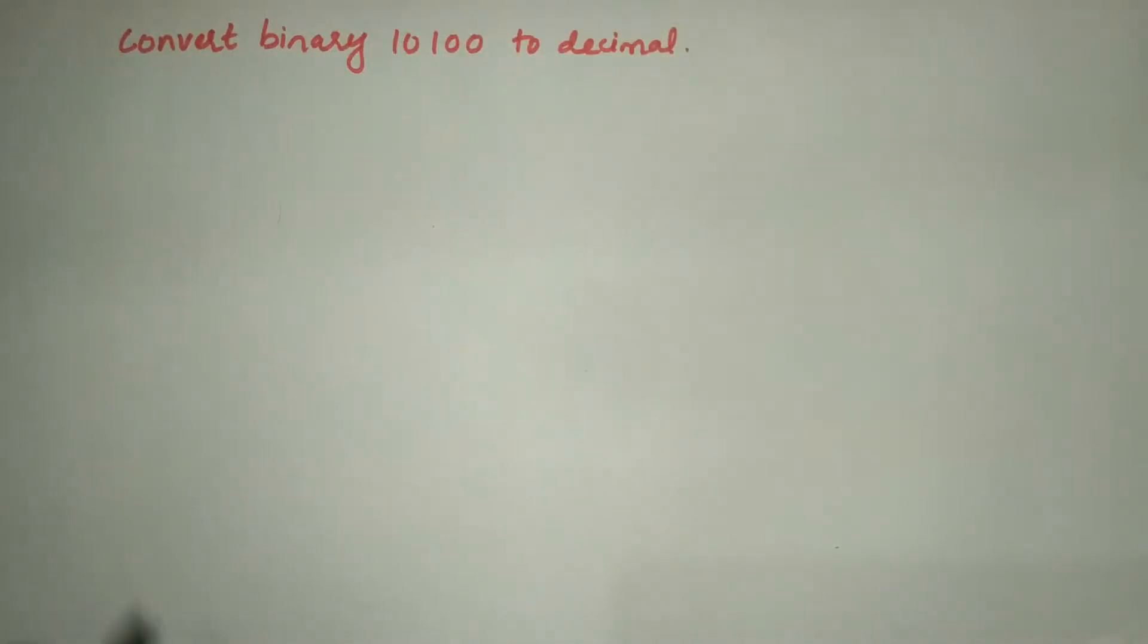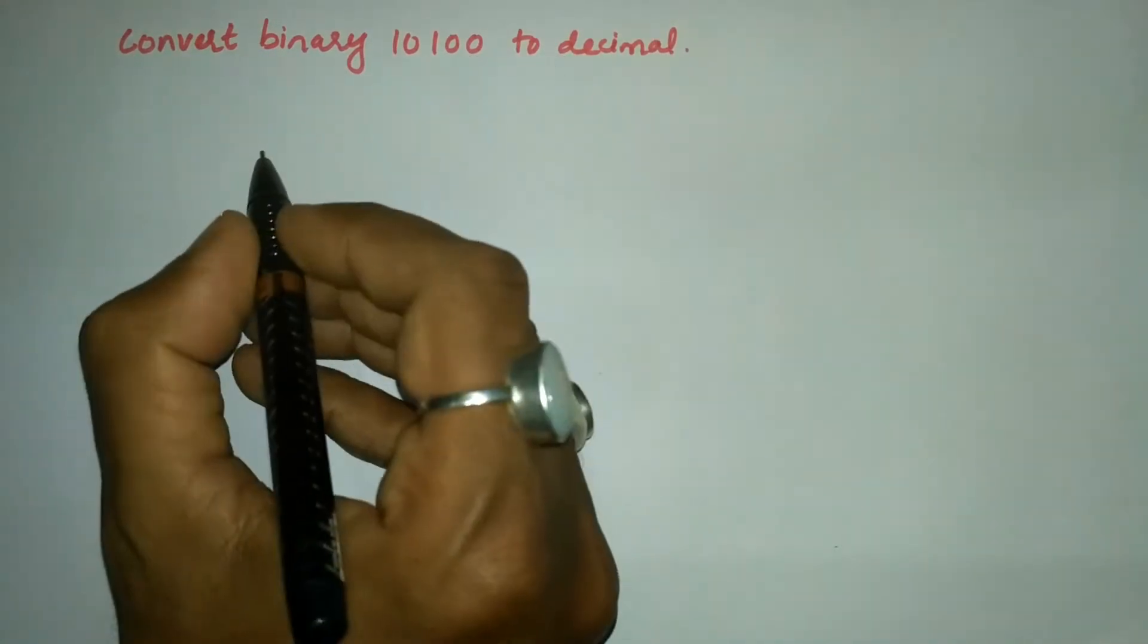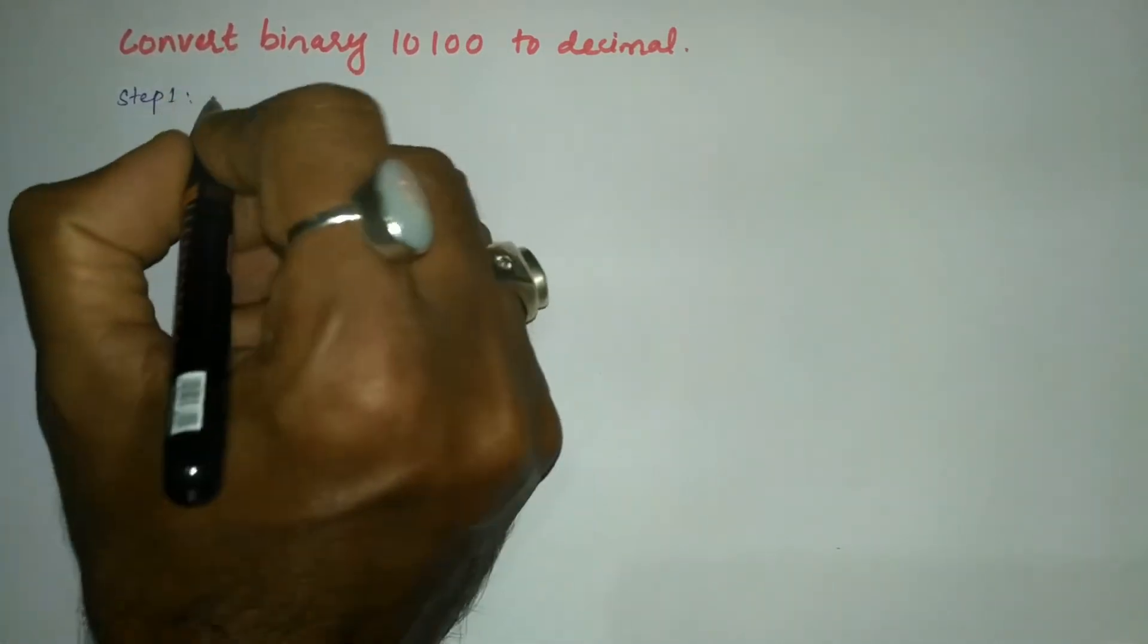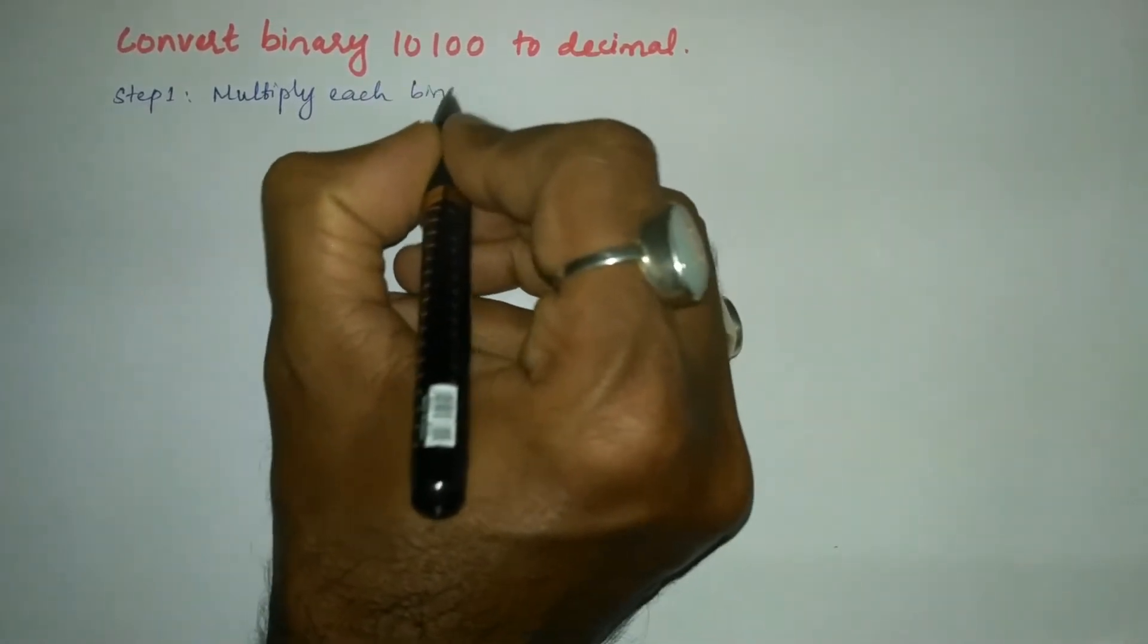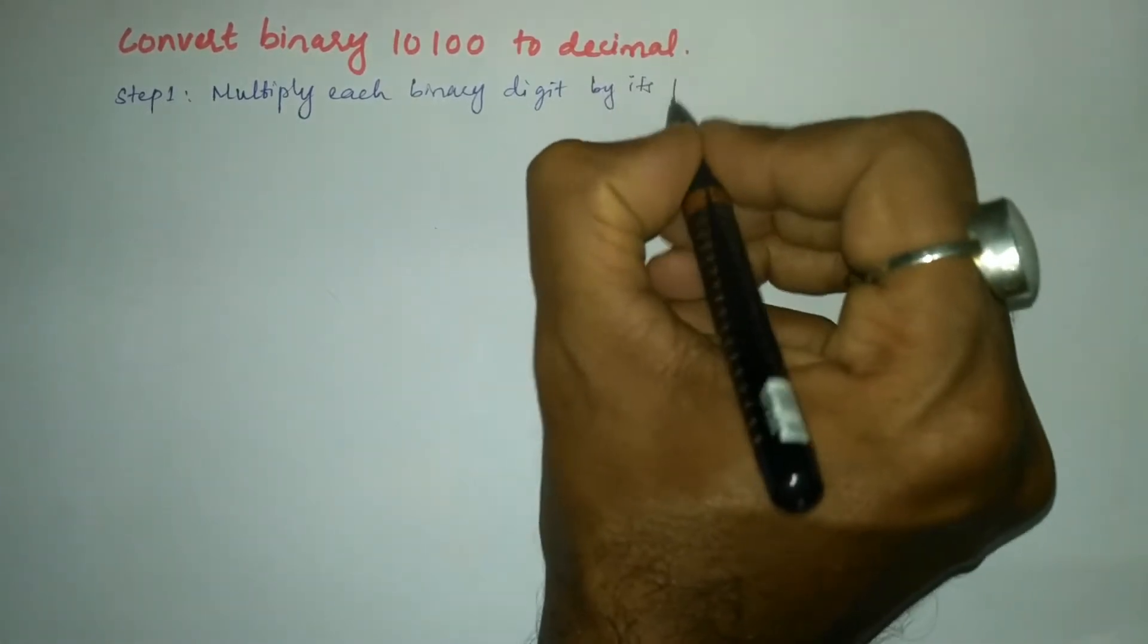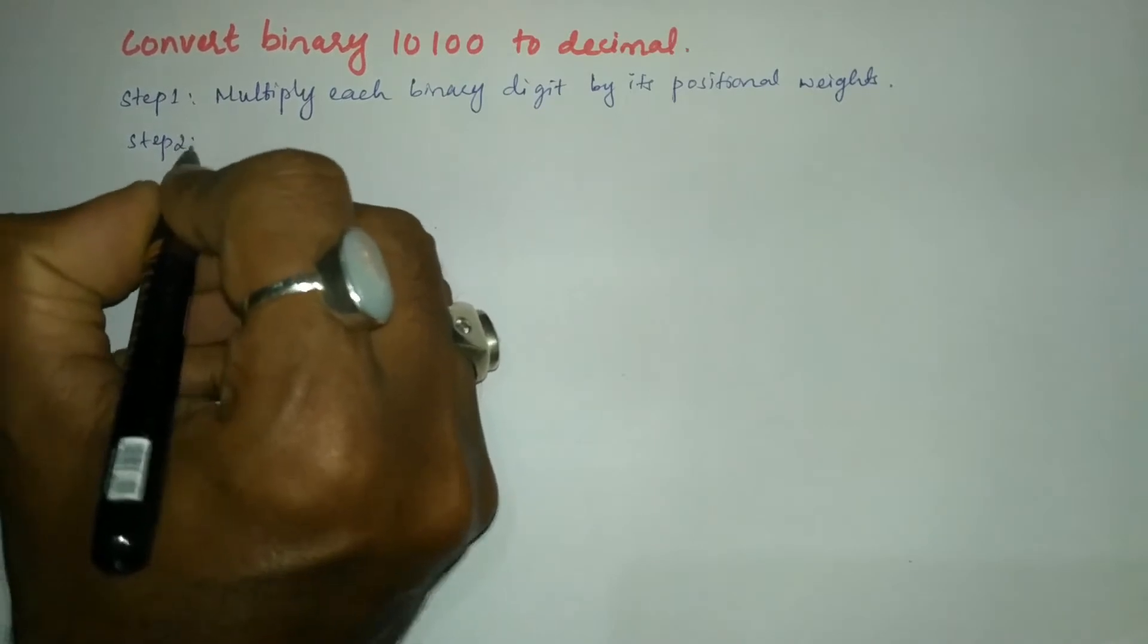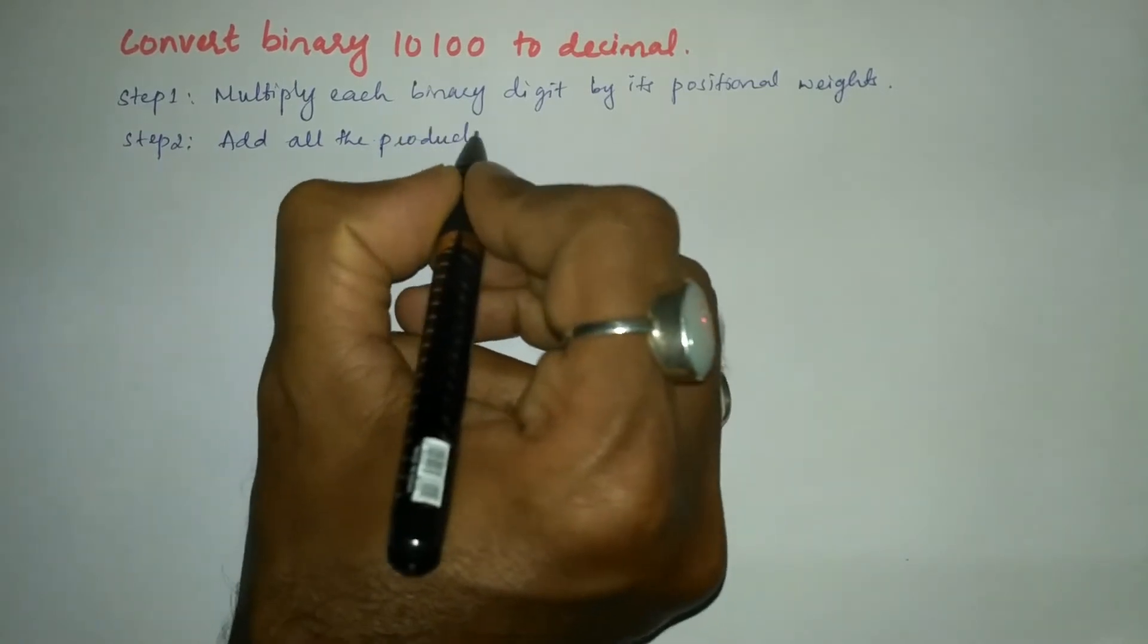Hello and welcome to Vision Academy. In this video, we are going to convert binary 10100 to decimal. Before we convert, we have to follow certain steps. Step 1: Multiply each binary digit by its positional weight. Step 2: Add all the products.